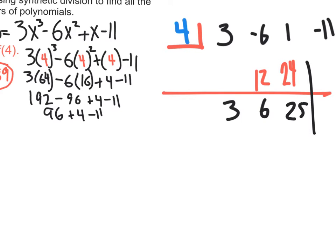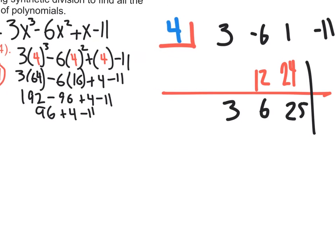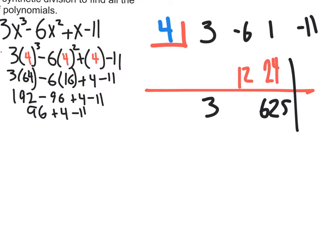And remember, we have a line right here. Now, let's continue. 4 times 25 is 100. So let me move this over a little. We get 100 up here. And negative 11 plus 100 is 89.